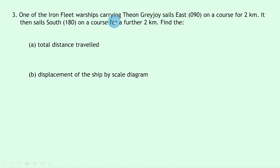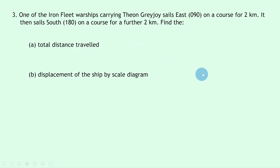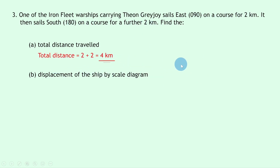Question three: one of the Iron Fleet warships carrying Theon Greyjoy sails east on a bearing of 090 for two kilometers, then sails south on a bearing of 180 for a further two kilometers. Part A: total distance = 2 + 2 = 4 kilometers.